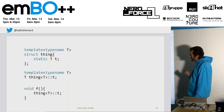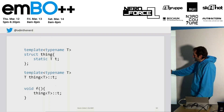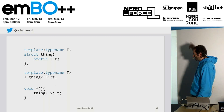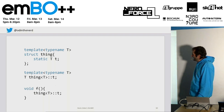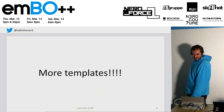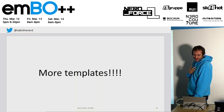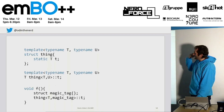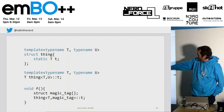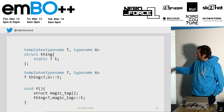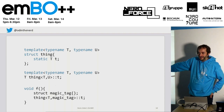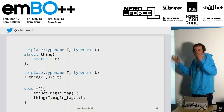So that one problem is gone, but it's still as good as a global variable — other code outside of f can just say 'thing t' and access it. How do we fix that? More templates, obviously. Add an extra template parameter to the class and pass in a local class as the tag. Nobody else can access that magic tag class because it's scoped inside f.